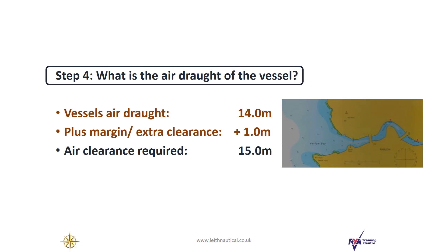Step four: what is the air draft of the vessel? The vessel's air draft in our example is 14 meters. This is the height of the mast above the water level. We've decided to allow an extra margin — in our example, we require an extra clearance of 1 meter. So in order to safely pass under the bridge at Farlow, the air clearance required will be 15 meters.